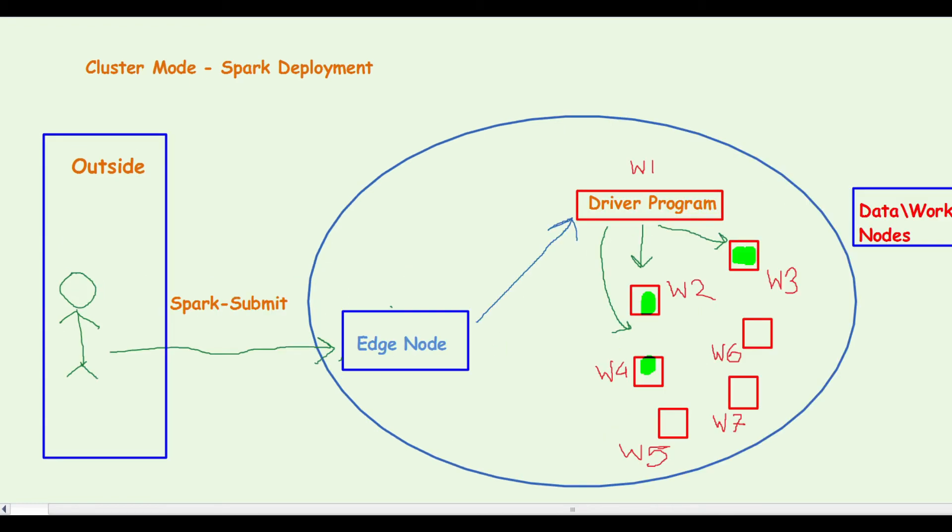Now let's try to understand cluster mode. In cluster mode, when a person or user submits a Spark job, the job gets submitted on the edge node. However, the driver program does not get spawned on the edge node. Instead, the edge node facilitates the driver program to be spawned in one of the worker nodes.